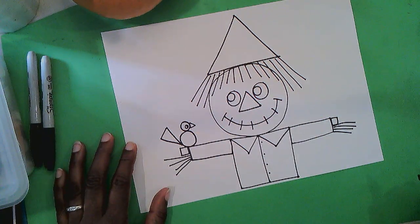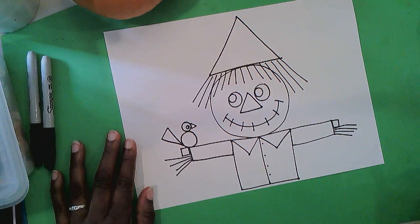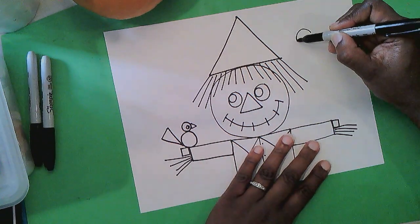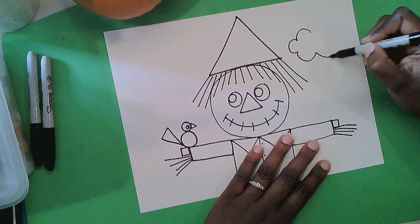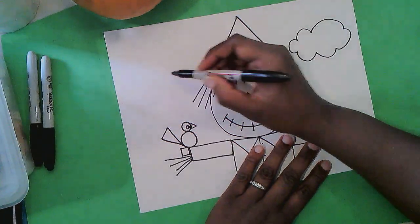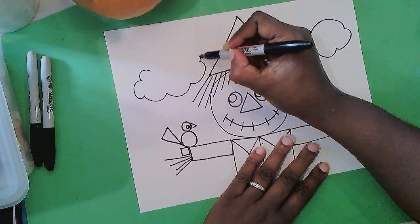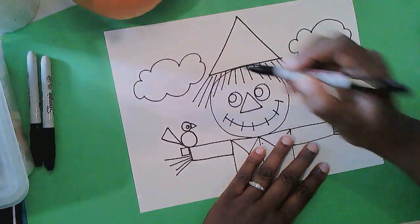And an eye. So our friend the scarecrow is looking at his friend. Use a bumpy line to add some clouds. One on the right and another one on the left.